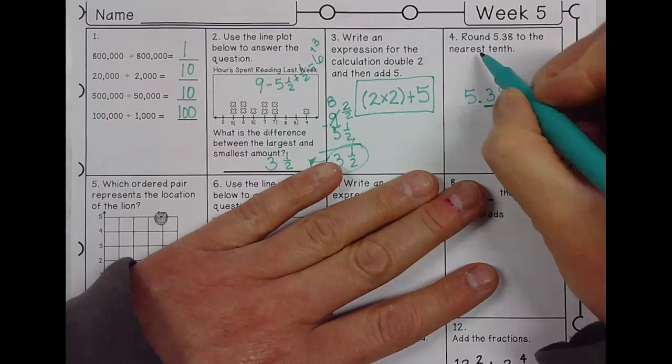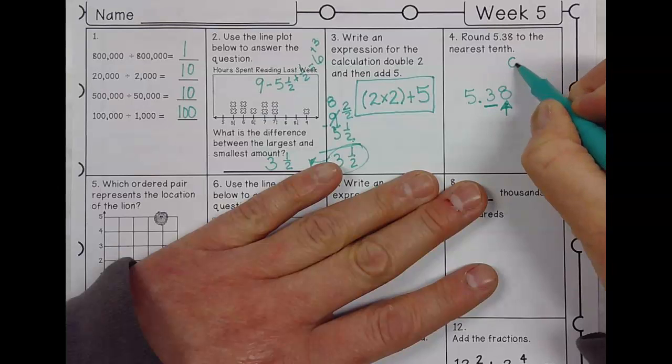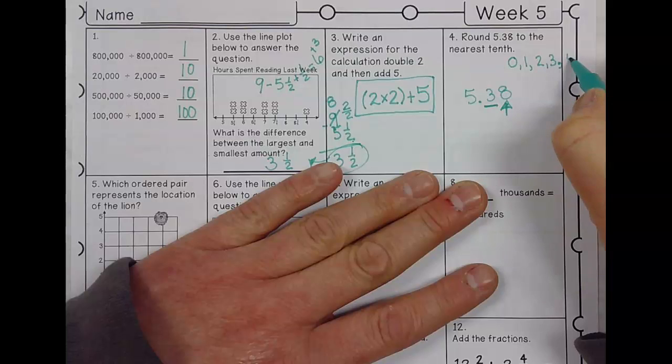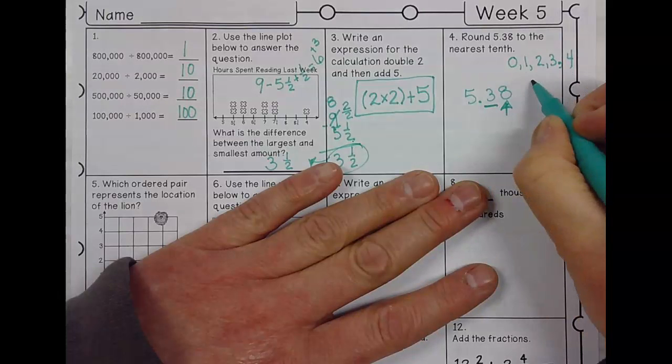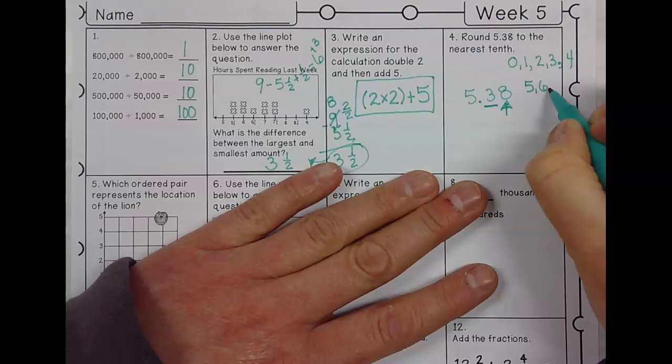Now, if my answer ends in a zero, a one, two, three, or four, I'm going to leave it the same. If the answer is five, six, seven, eight, nine, it's going to bump it up.